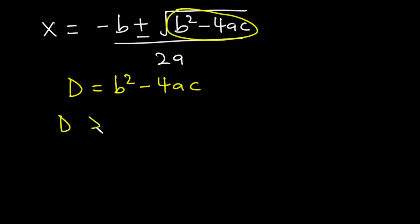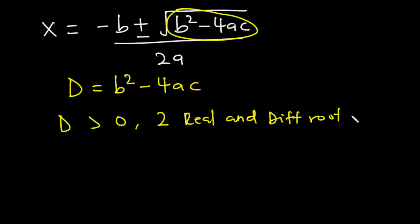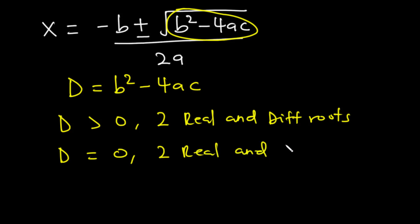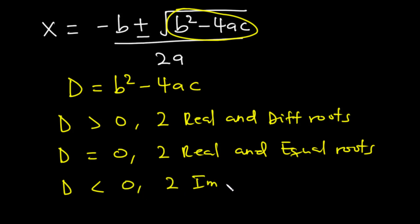Whenever the discriminant is greater than 0, the equation will have 2 real and different roots — or 2 distinct roots. If the discriminant is equal to 0, the equation will have 2 real and equal roots. And whenever D is less than 0, the equation will have 2 imaginary or complex roots.